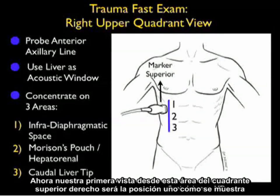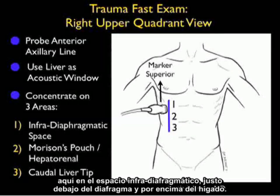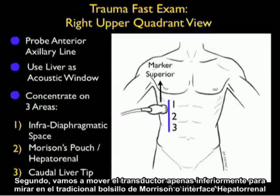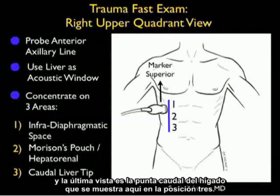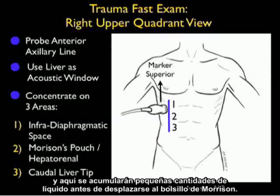Our first view from the right upper quadrant area will be position one, in the infradiaphragmatic space just below the diaphragm and above the liver. Second, we'll move the probe slightly inferiorly to look into the traditional Morrison's pouch, or hepatorenal interface. The last view is the caudal tip of the liver, shown here in position three. It's very important to look at the caudal tip of the liver, as this represents the beginning of the right pericolic gutter, and small amounts of fluid will pool here before moving into Morrison's pouch.